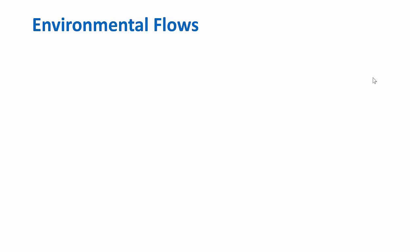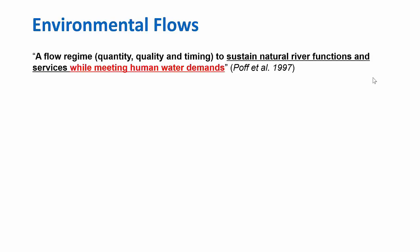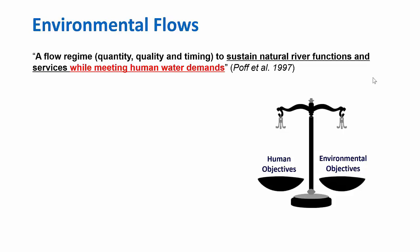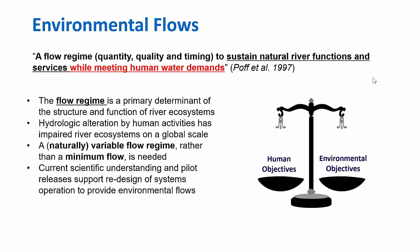What are environmental flows? When we're referring to environmental flows, it's a flow regime — basically a flow throughout the year that sustains natural river functions while meeting human water demands. So when we're talking about environmental flows, it's not only related with the environment or with ecosystems, but also trying to meet human water demands. This was actually defined by Leroy Poff in 1997. Environmental flows is this balancing, or determining a flow regime, this variation throughout the year that supports both the environment and human objectives.